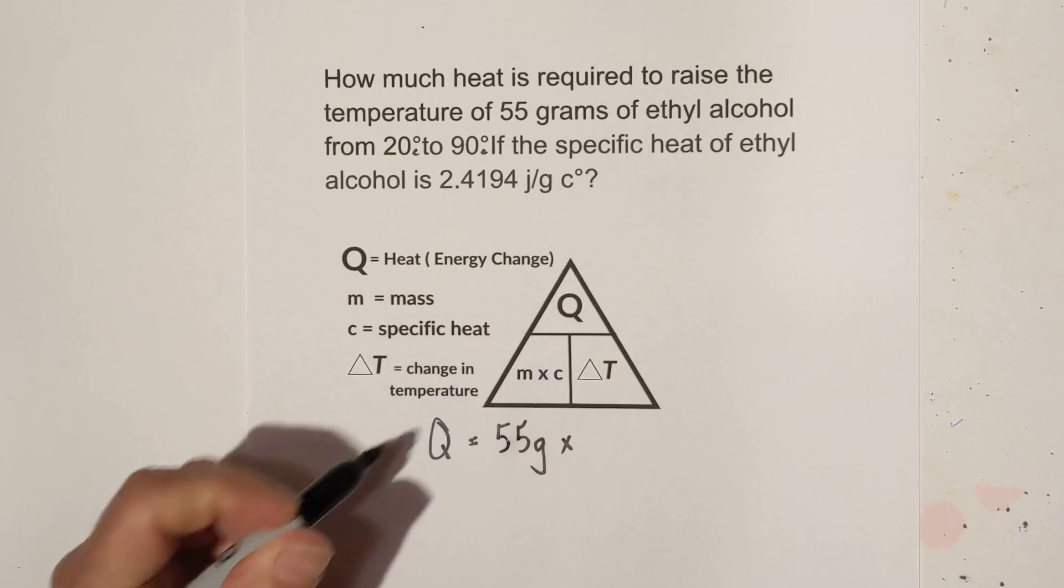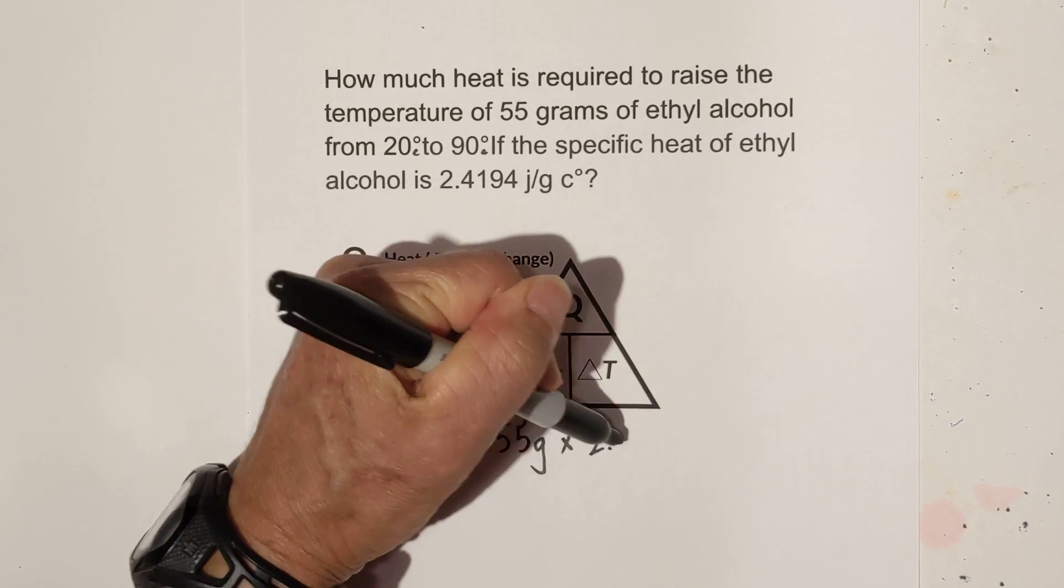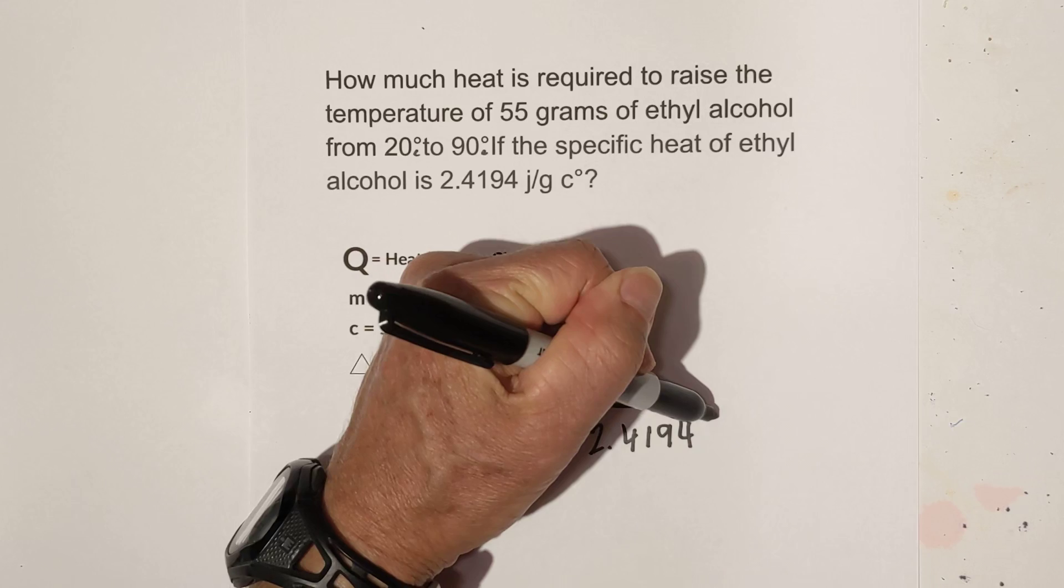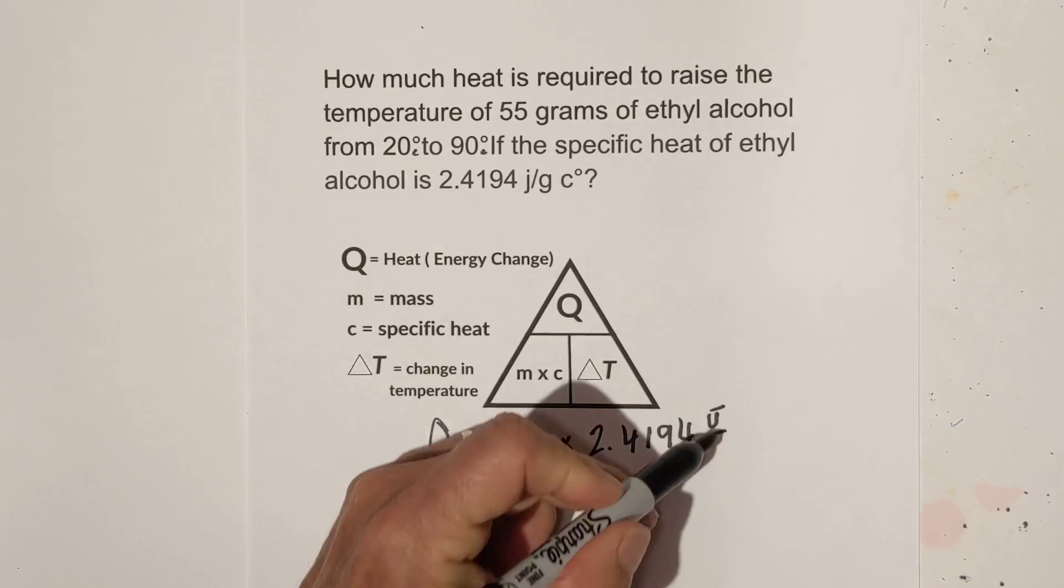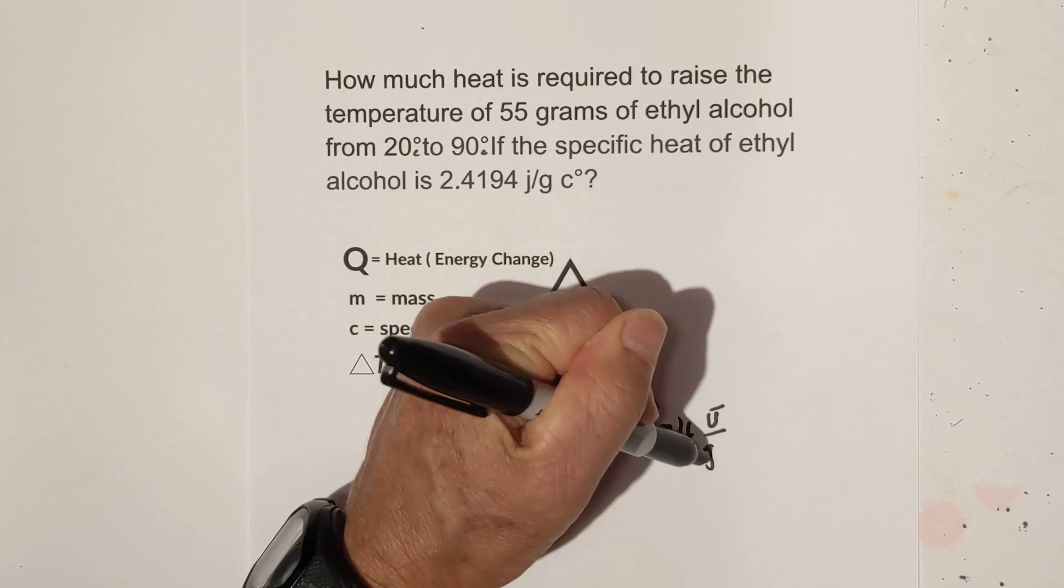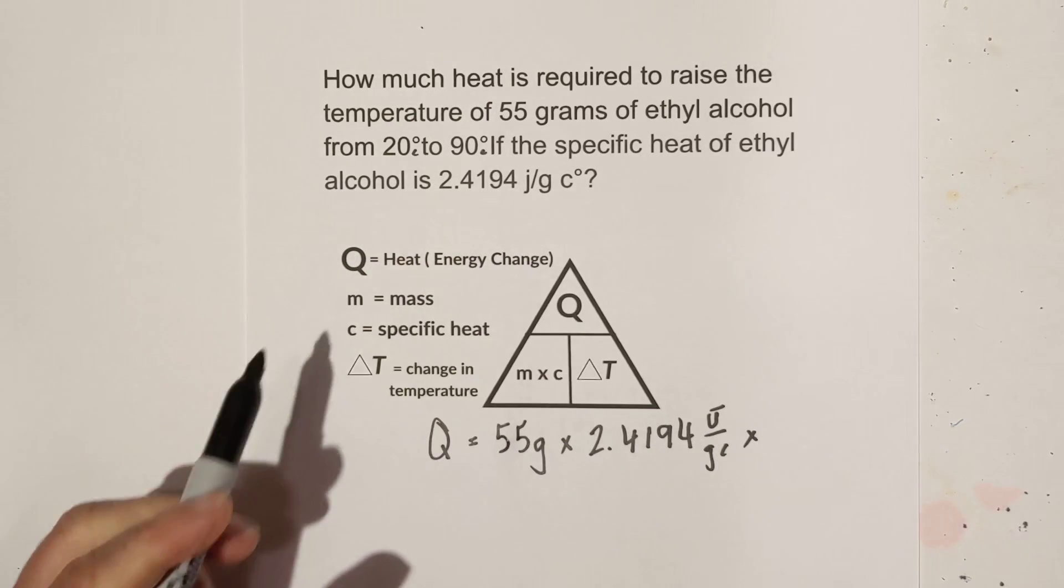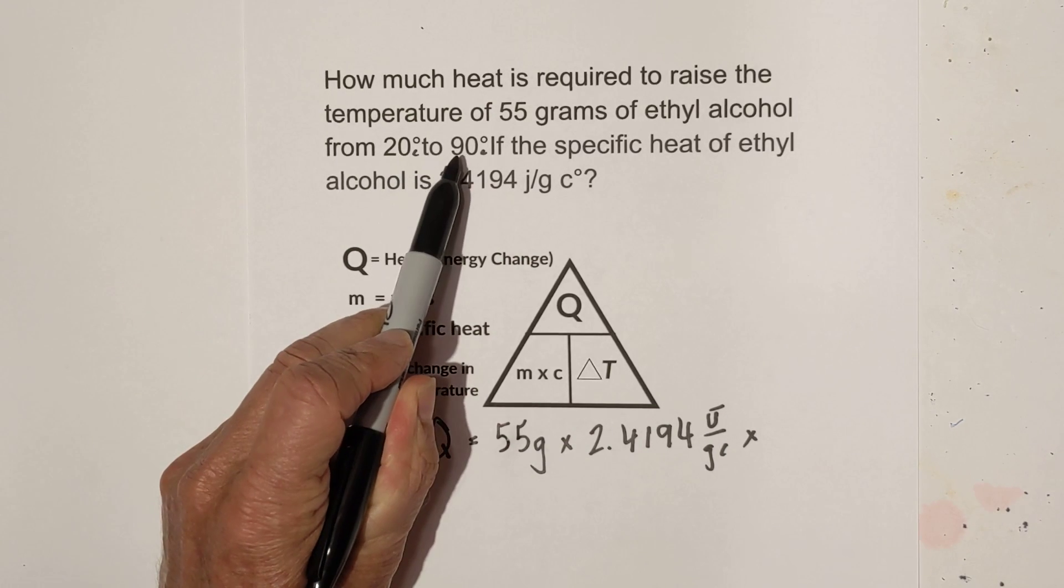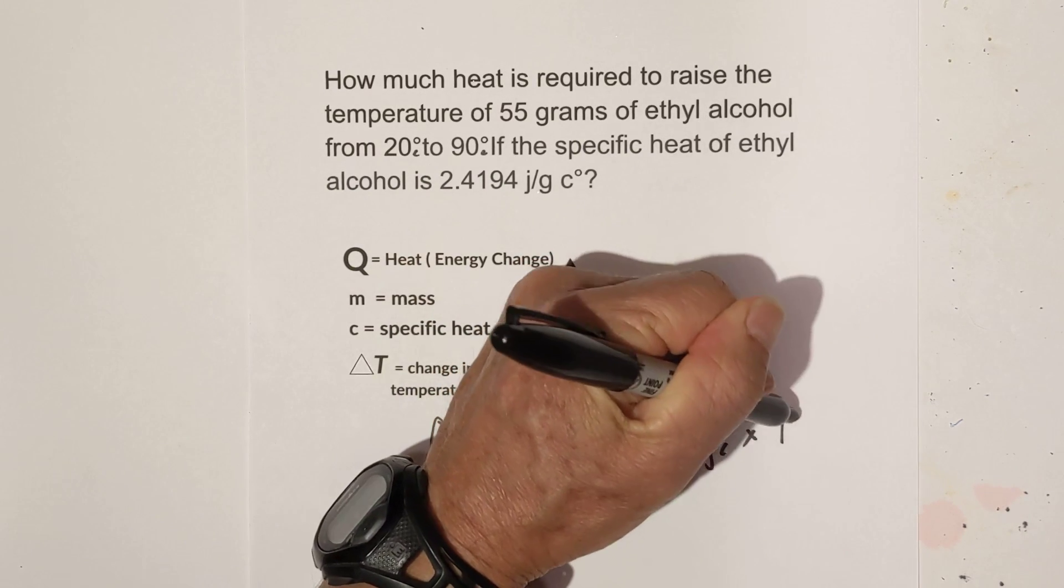And then we have a specific heat of 2.4194 joules over grams times Celsius. And it looks like the change in temperature was from 20 to 90 so that is 70 degrees Celsius.